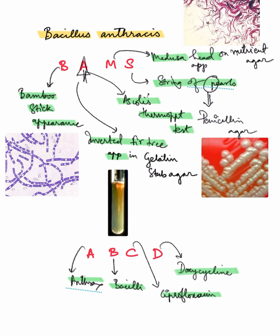Quick recap: for lab diagnostic features we have BAMS — B for bamboo stick appearance, A for Ascoli's thermoprecipitation test and inverted fir tree appearance in gelatin stab agar, M for medusa head appearance on nutrient agar, and S for string of pearls appearance on penicillin agar. For treatment, ciprofloxacin or doxycycline.